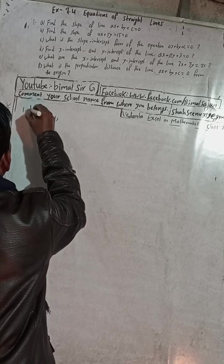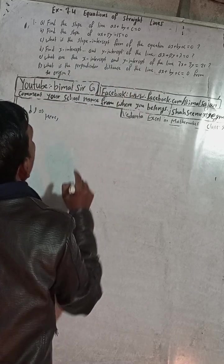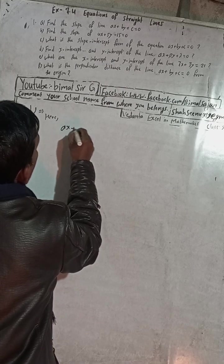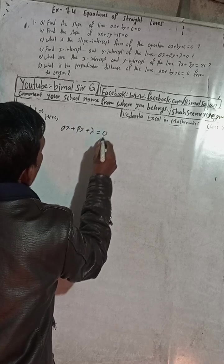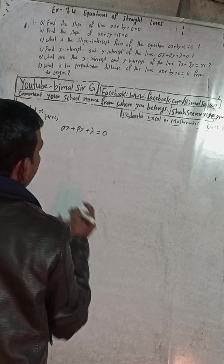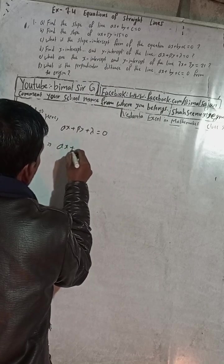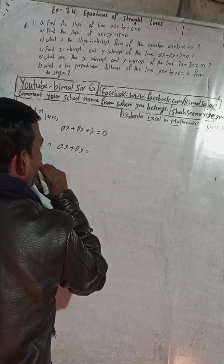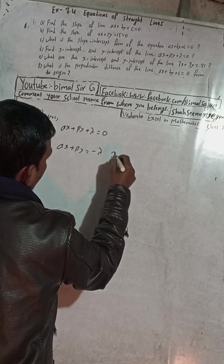Part (d): find the x-intercept and y-intercept of the line αx + βy + γ = 0. We need to convert this to double-intercept form. Starting with αx + βy = -γ; now divide both sides by -γ.